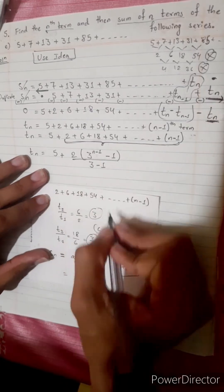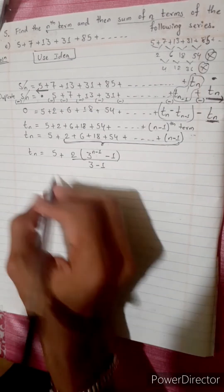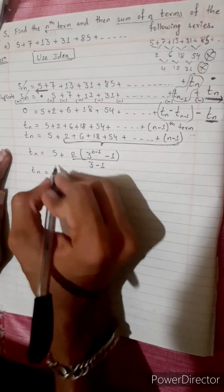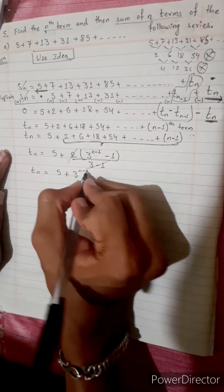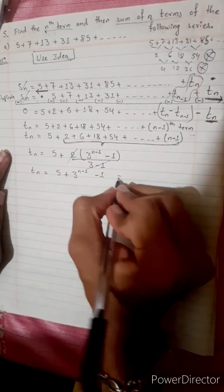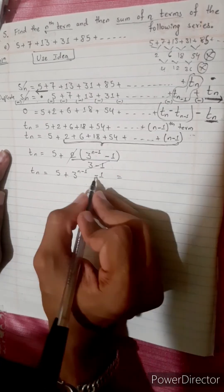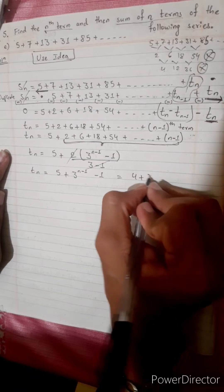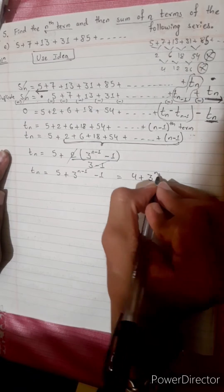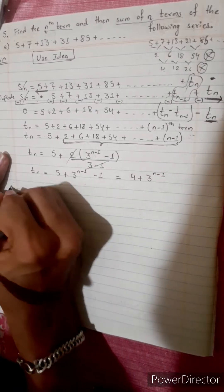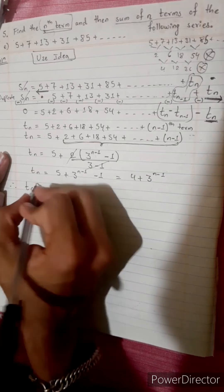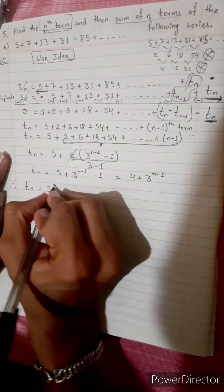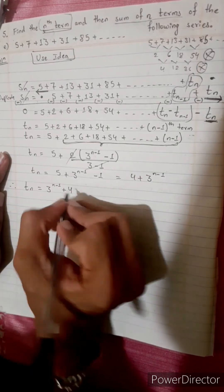With r equals 3, r minus 1 equals 2. So Tn equals 5 plus 2 times 3^(n-1) minus 1 divided by 2. The 2s cancel, giving 3^(n-1) minus 1. Therefore the nth term is Tn equals 3^(n-1) plus 4.